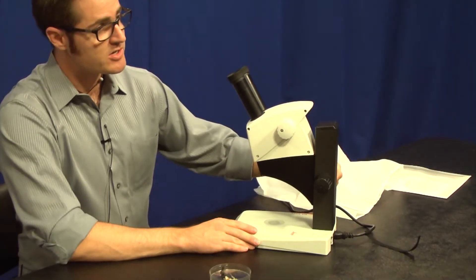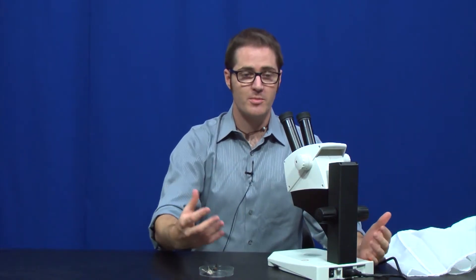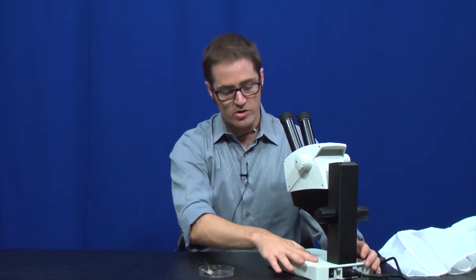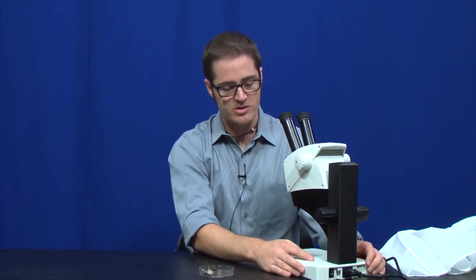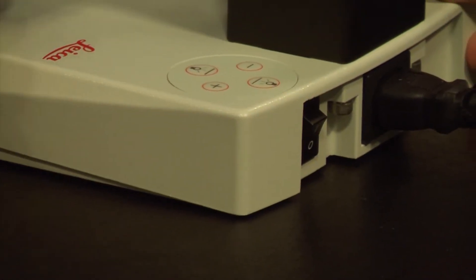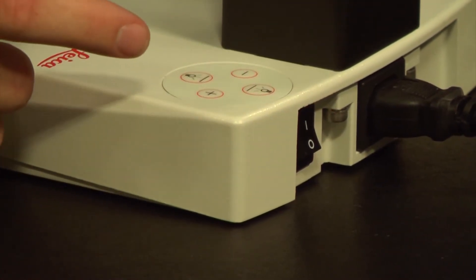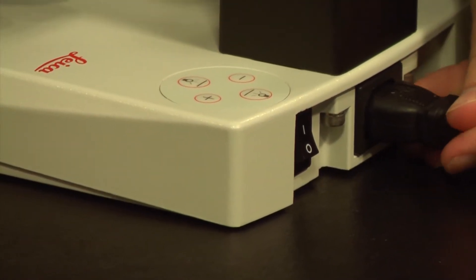We have a couple of different illumination techniques with this scope. We have what we call reflected illumination or light from the top down, and then we have transmitted light or light coming up from the bottom, depending on the sample you're using. The controls for the light are here on the back right-hand corner of the microscope. There is a power switch on the back of the microscope. We'll flip that up to bring power to the microscope.